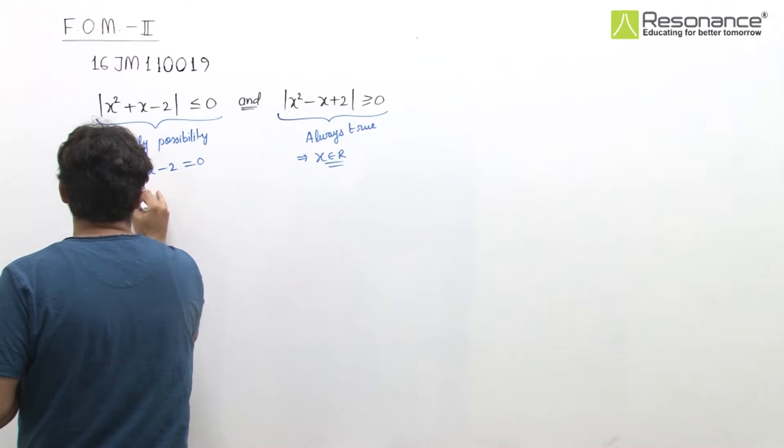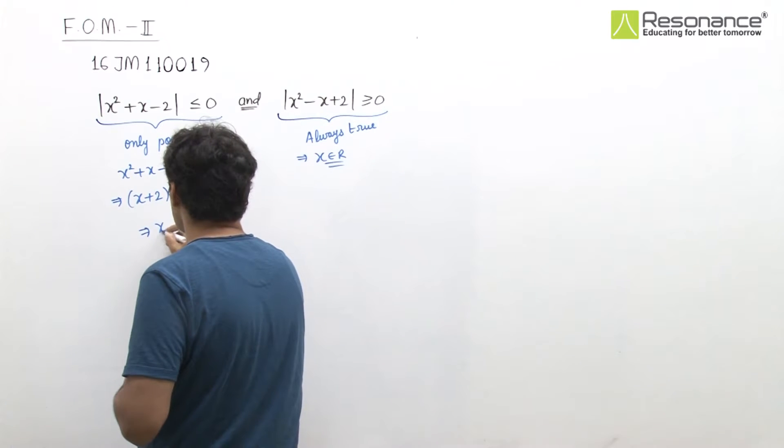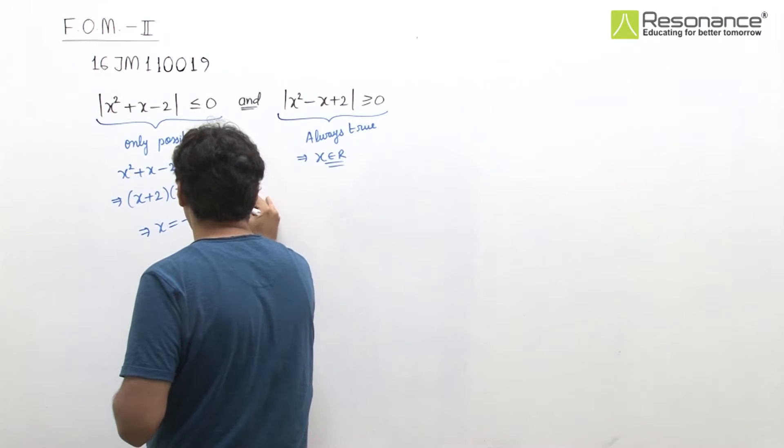And we can factorize it very easily: x plus 2, x minus 1 equal to 0. So, 2 values satisfy kar rahi hai, ek to hai minus 2 or x equal to 1.